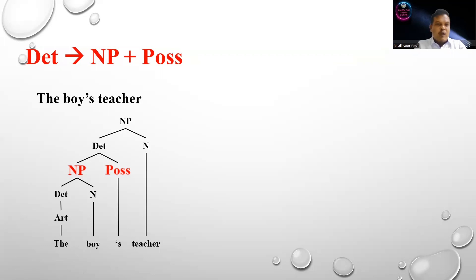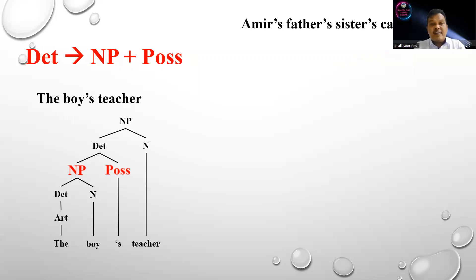Now we are going to see how the structure of NP-POS is used in a sentence, not just in a phrase. So we have the sentence: 'Amir's father's sister's car is new.' This is a more complicated sentence.